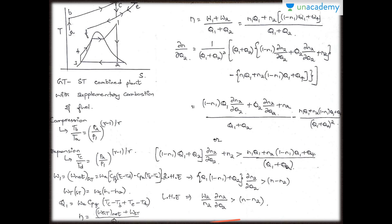With additional firing of fuel in the HRSD, the power output of the steam cycle as well as its efficiency increase, and so the increase in overall efficiency diminishes. Therefore, supplementary firing is becoming less and less attractive. Generally, it is more profitable to burn the fuel in the combustor of the gas turbine plant itself since the heat is supplied at a temperature higher than that in the steam cycle. For the compression process of air, the equation is TB/TA equals (P2/P1) raised to (gamma minus 1)/gamma, where gamma is 1.4. For the expansion process, it is TC/TD equals (P2/P1) raised to (gamma minus 1)/gamma.